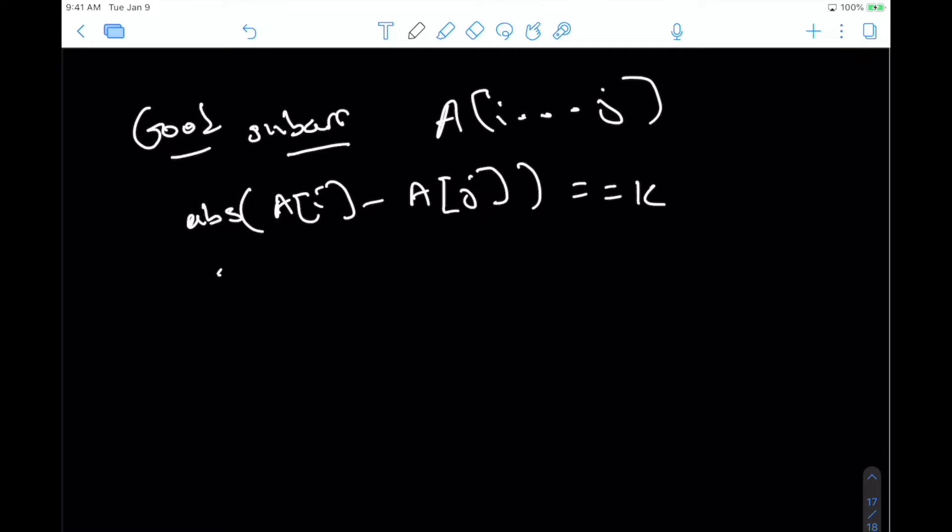So this is the definition of a good subarray. From i to j, the absolute value needs to be equal to k. So we only have two cases. Either a_i minus a_j is equal to k, so this is if a_i is bigger than a_j, or a_j is the bigger value, so it's actually a_j minus a_i. You could also write it in this format, minus a_i plus a_j. So depending on which one is bigger, we can just convert this absolute value to this.